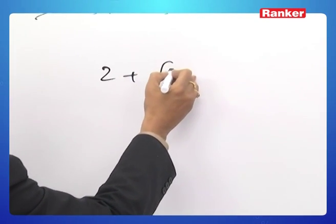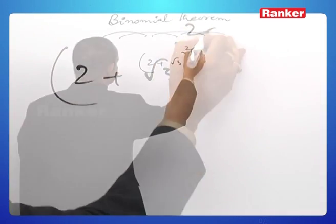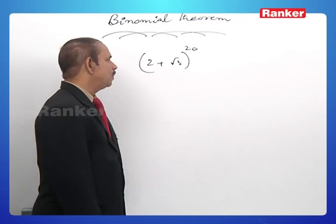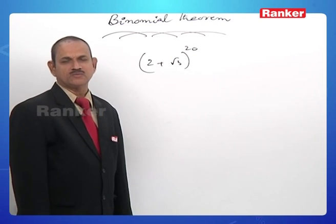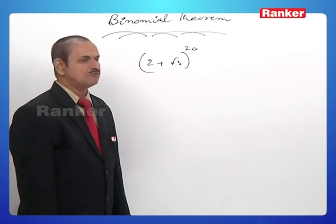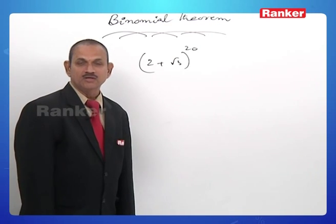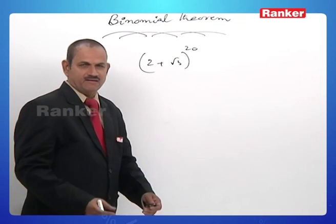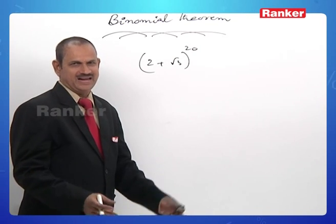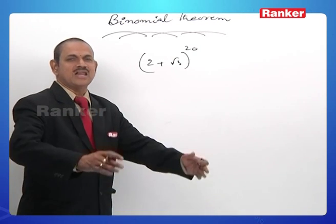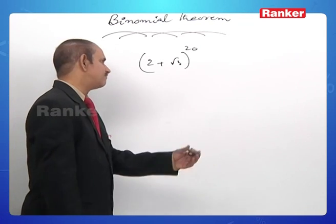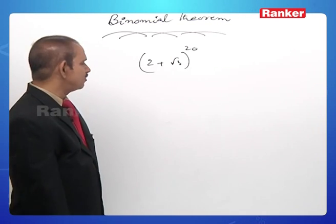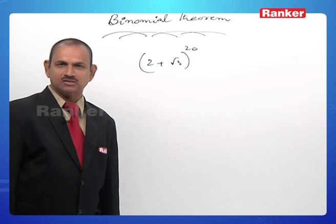Consider the expansion (2 + √3)^20. What is the numerically greatest term? How many terms will there be? There will be 21 terms. The very first term is 2^20, and the next term is 20C1 × 2^19 × √3, which is 2^19 × 1.732. Like that, the terms will be increasing and decreasing. Out of all those 21 terms, what is the largest numerically? There has been a very good process by comparing the (r+1)th term and rth term.